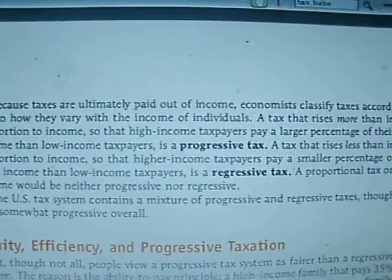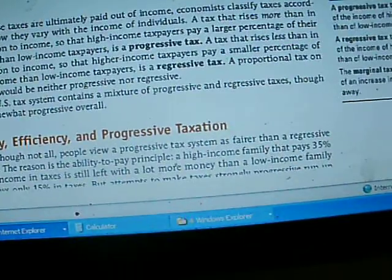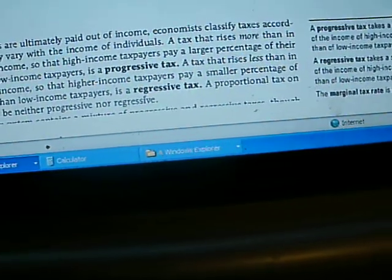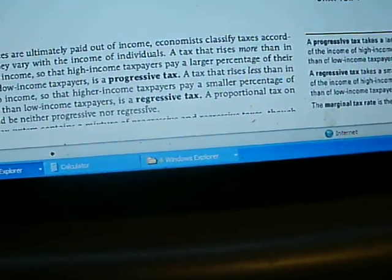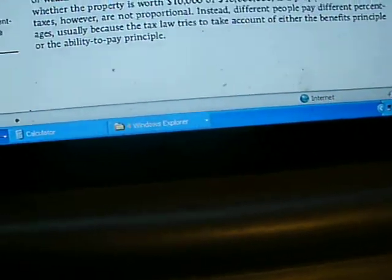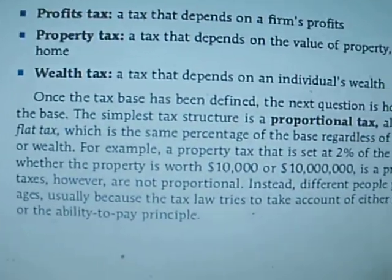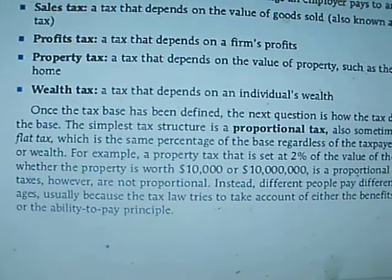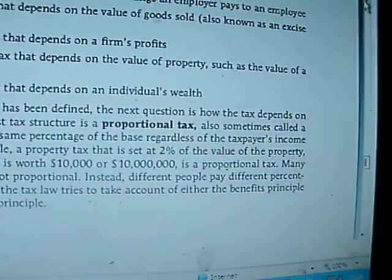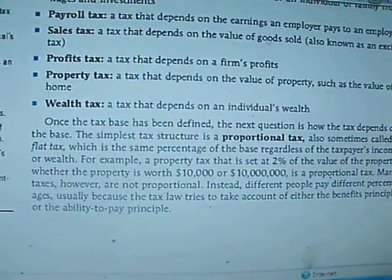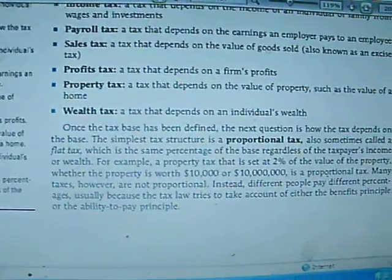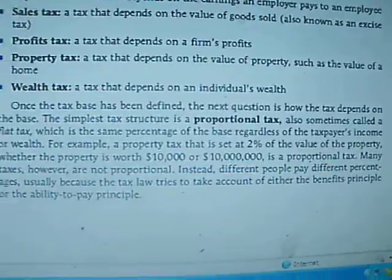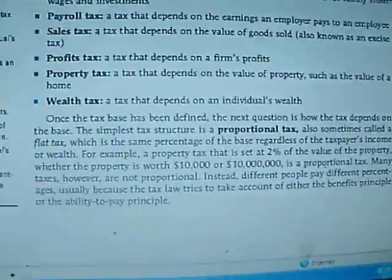Now, if we go into the book and we find proportional tax — which is the same percentage regardless of the taxpayer's income — which means that all those 15% figures were based on income, not property value. Income. Property value is not mentioned.